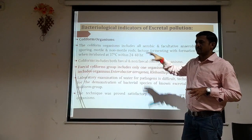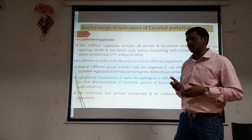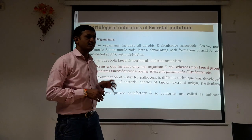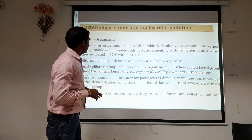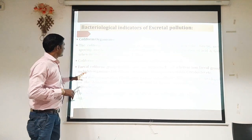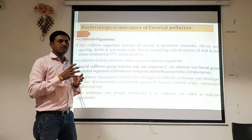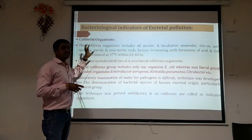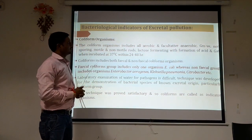Basically, coliform organisms are normally present in the intestine, and that is why they are found in the fecal matter or feces of humans or animals. Coliform organisms occur in a rod shape or spherical shape, and they are present in the colon, which is why they are called coliform organisms.